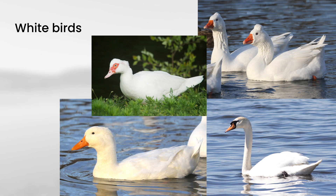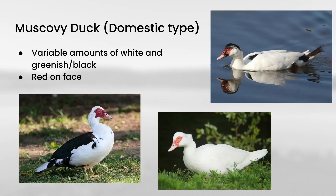I should also mention that the domestic ducks you see typically are descended from one of two species, and they are both represented here. So this bottom one would be from a mallard, and then the top one would be from a muscovy duck. And often the simplest way to tell is to just look in the face — if it has red in the face, it's a muscovy duck, and if it doesn't, it's a mallard. We'll talk about muscovy duck for a minute because these really aren't found in the wild anywhere near Pennsylvania, but they are quite common as domestic birds, and they can show variable amounts of white and greenish black. The greenish black would come from their natural plumage, and then the domestic influence puts a lot of white into many of the birds. And you're looking for a lot of red on the face of these.